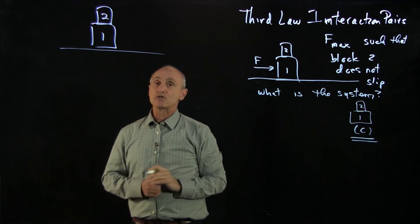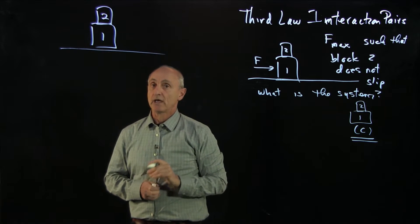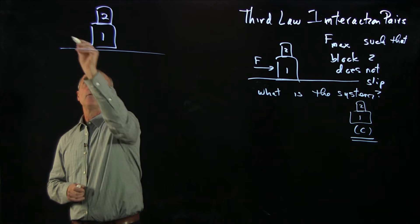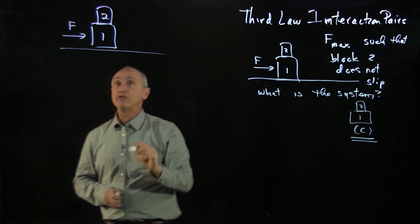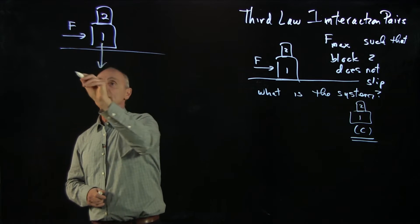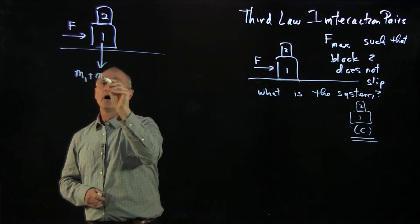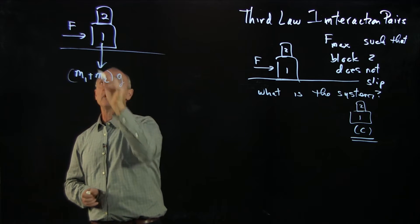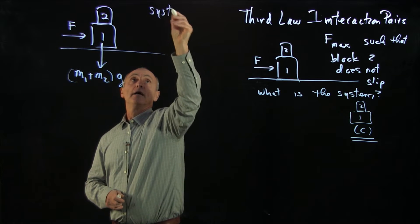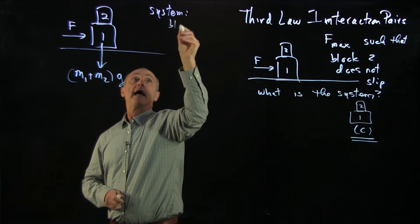So once again, let's draw free body diagrams. Now we begin, we're pushing block one with a force. Gravitation is the sum of these two forces because our system here is block one and block two.